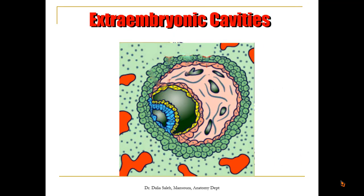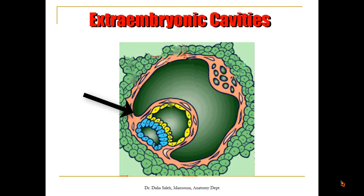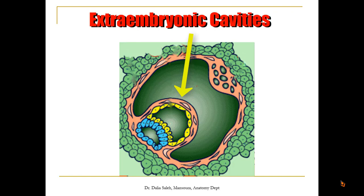Later on, cavities appear in the extra-embryonic mesoderm. These cavities will coalesce together and form a large cavity called the extra-embryonic coelom. The extra-embryonic coelom will split the extra-embryonic mesoderm into two layers: a layer that lines the trophoblasts and also covers the amniotic cavity — this is the somatic layer — and a layer that covers the yolk sac — this is the splanchnic layer of extra-embryonic mesoderm.